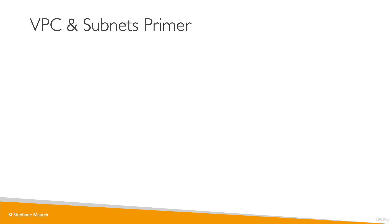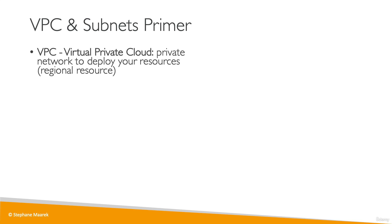A VPC is a virtual private cloud — a private network for you to deploy your resources in, such as your EC2 instances. A VPC is linked to a specific region.